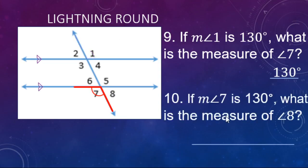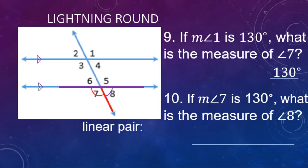Number ten: if angle one is 130 degrees, what is angle eight? Angles seven and eight form a linear pair — a line with a ray going off it. Linear pairs are supplementary, same as consecutive interior angles: they add up to 180 degrees. So 180 minus 130 gives angle eight as 50 degrees.